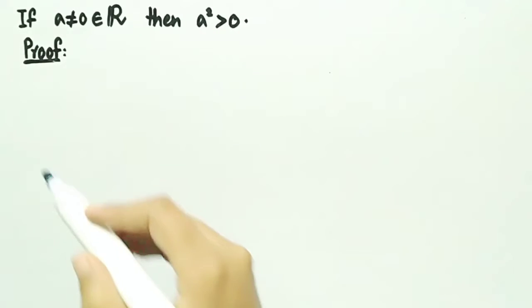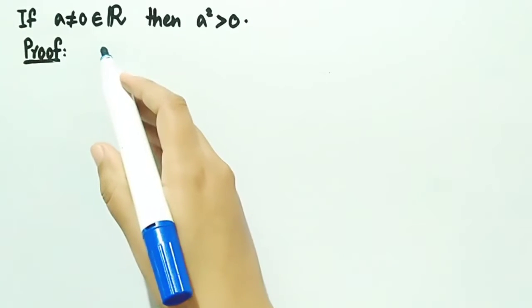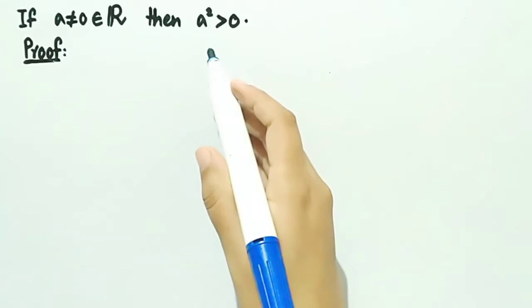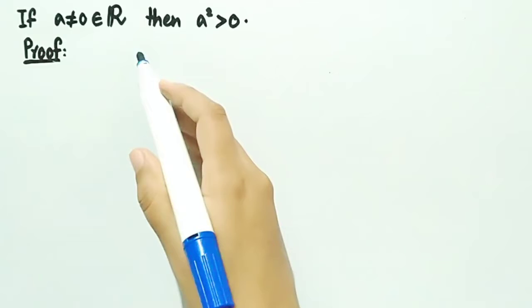In this video, we will prove that if a is any non-zero real number, then a square is greater than zero. We will divide this proof into two cases.